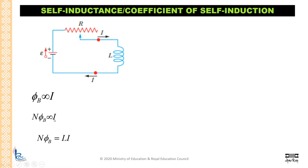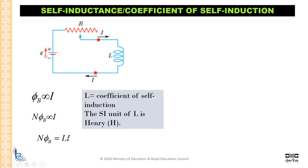To remove the proportionality sign, you need to introduce a constant. Here the constant is L. This L is called the coefficient of self-induction, or also called self-inductance. Self-inductance has a unit called Henry, represented by capital H. From this formula, you can have another unit for self-inductance: if you take the current to the other side, you have flux over current. The other unit would be Weber per ampere.